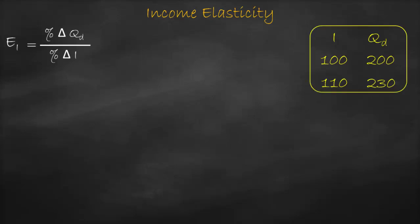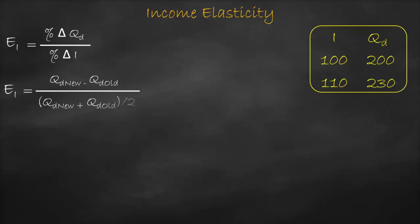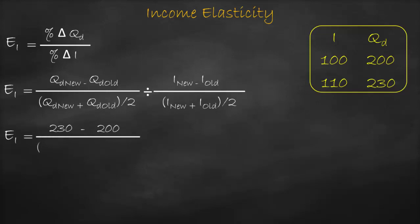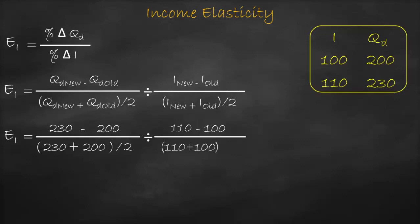Higher income leads to higher quantity demanded — we have a positive relationship, so it's a normal good. Let's prove it with the income elasticity formula using the midpoint method: new quantity demanded minus old quantity demanded, divided by the average of quantity demands, divided by new income minus old income, divided by the average of income. Substituting: 230 minus 200, divided by (230 plus 200) divided by 2, divided by 110 minus 100, divided by (110 plus 100) divided by 2.